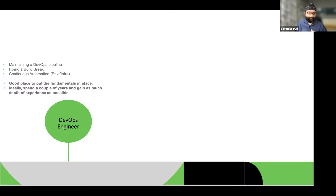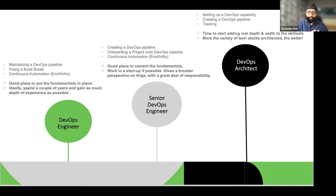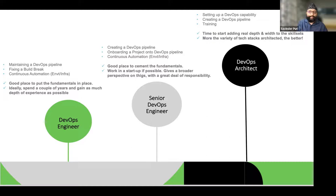Then you move on to a senior DevOps engineer, where instead of maintaining a pipeline you're creating one — onboarding projects and doing more complex automations. After that you evolve into a DevOps architect, setting up DevOps capability for an organization, creating multiple pipelines across technology stacks, training other people, and giving talks internally to raise awareness of DevOps.